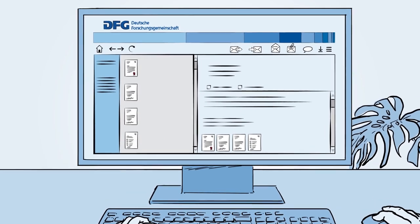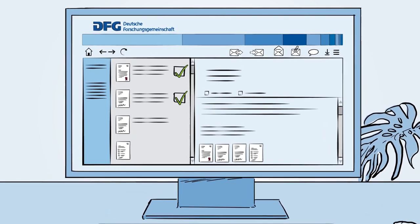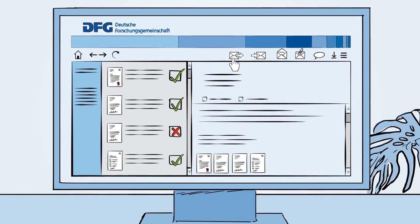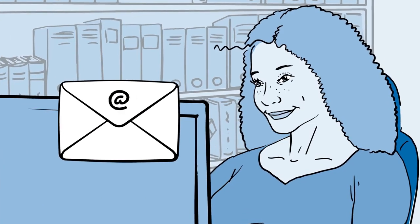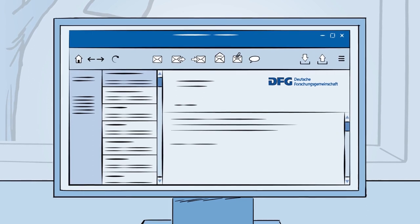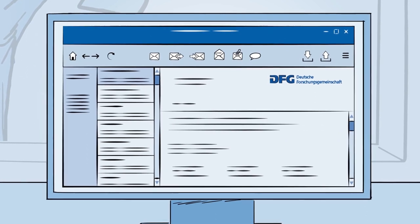First, all the formal criteria are checked to see whether anything is missing. Elena receives an email with all the important information she needs, including her contacts at the DFG.